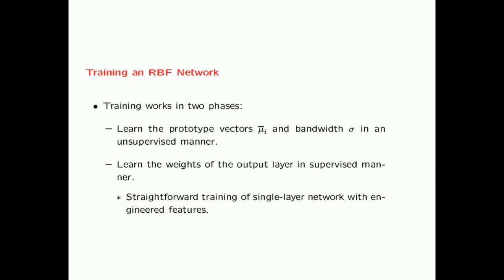Training works in two phases. To train the hidden layer, you need only the prototype vectors and the bandwidth, which are learned in an unsupervised manner. Once you learn the prototype vectors and bandwidth, the weights of the output layer are learned in a supervised manner — that is just straightforward training of a single-layer network with engineered features. You can apply backpropagation, though you don't even need it since it's just a single layer.